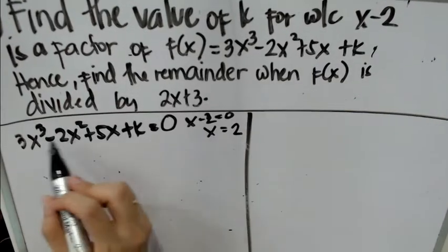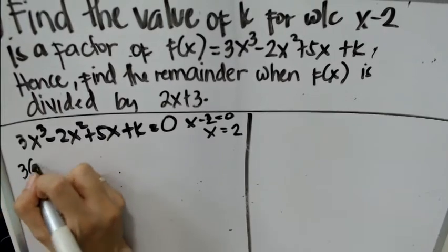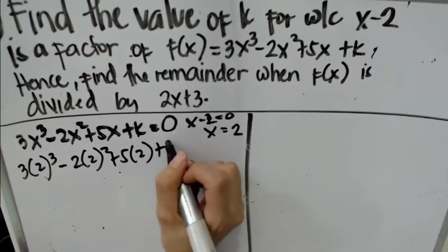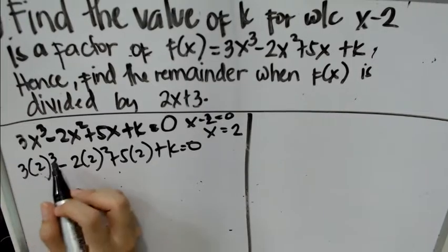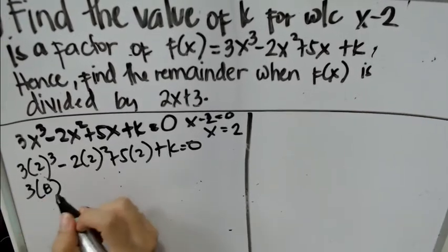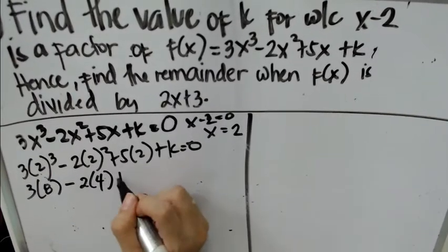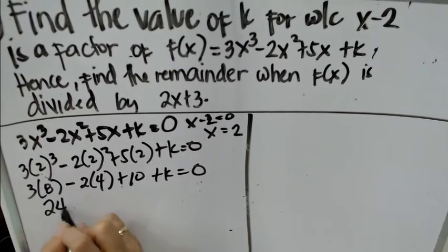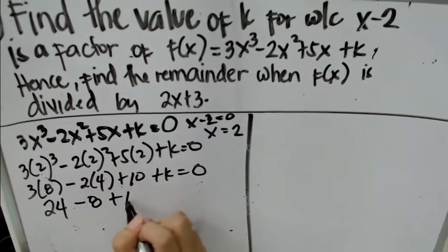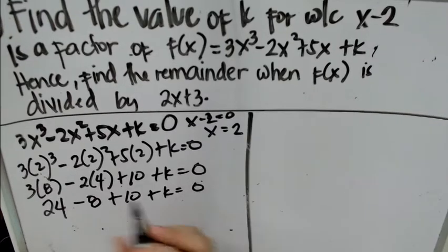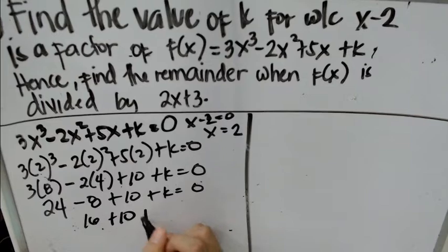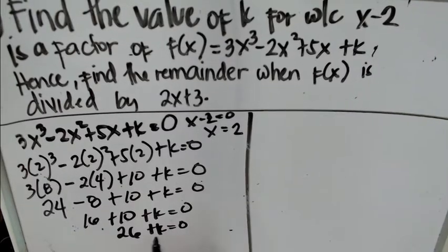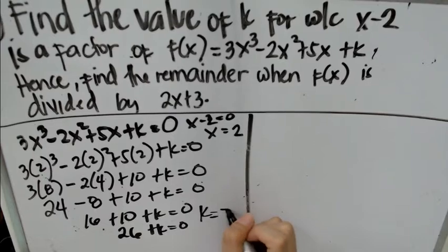We substitute every x with 2. We have 3 times 2 cubed. 2 cubed is 8, times 3; minus 2 squared which is 4, times 2; plus 5 times 2 which is 10; plus k equals 0. So 3 times 8 is 24, minus 2 times 4 is negative 8, plus 10 plus k equals 0. 24 minus 8 is 16, plus 10 plus k equals 0. 16 plus 10 is 26, plus k equals 0. Therefore, transposing 26 to the other side, k is negative 26.